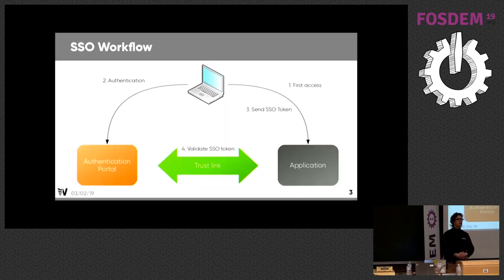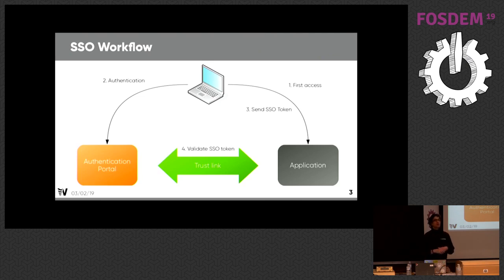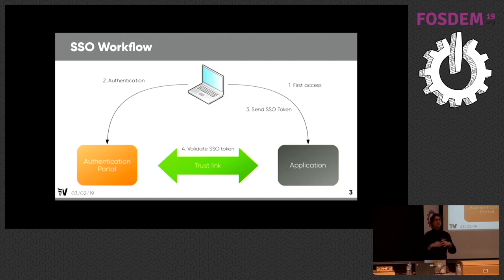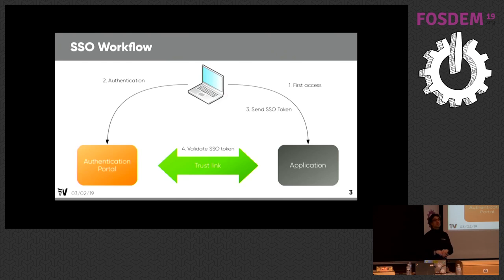LemonLDAPNG is about single sign-on and web single sign-on. Here's a smaller picture to understand how it works. The goal is to protect access to a web application and to give authentication to the application. So when a user wants to connect to the application the first time, he needs to authenticate and will be redirected to the authentication portal. LemonLDAPNG is the software that implements this authentication portal. When he logs in, he will have a single sign-on token — a security token — and this token will be used by the application to authenticate the user. So there is a trust between the application and the single sign-on system.